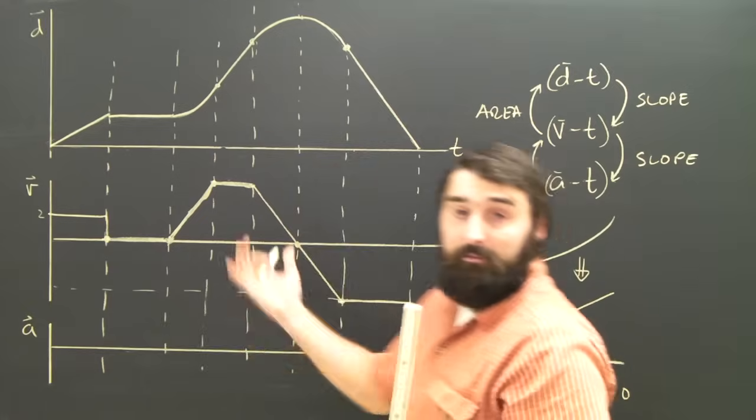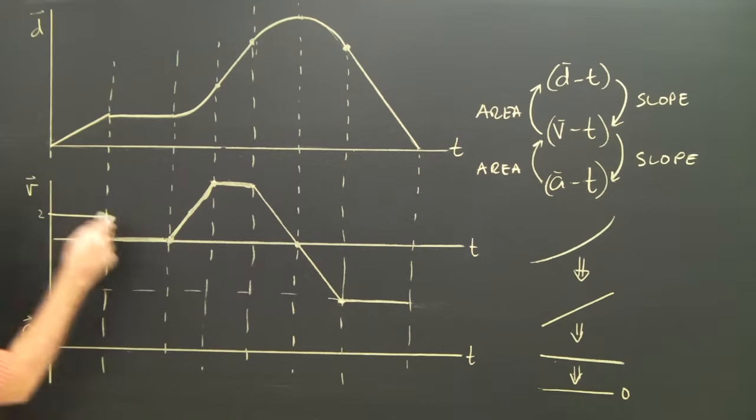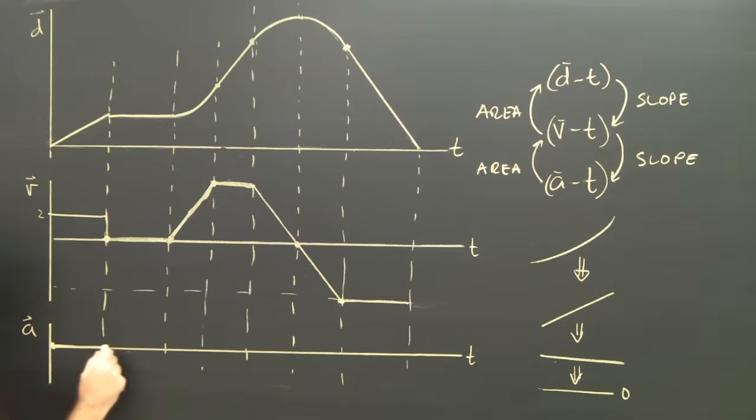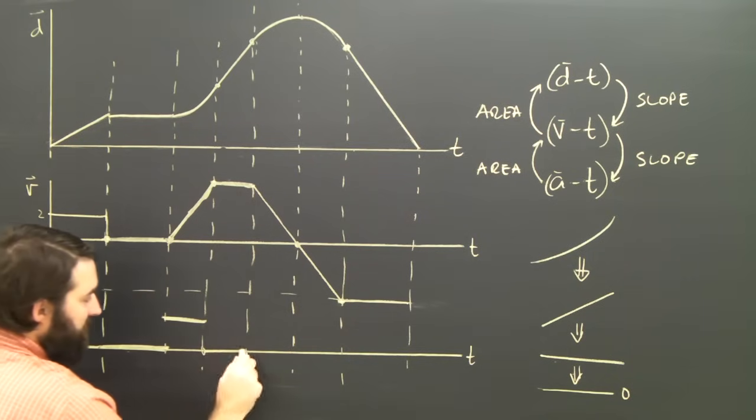Finding the AT graph from the velocity time graph is the exact same thing, but generally easier. What's the slope for the first little bit? It's clearly zero. What's the slope for the second bit? It's clearly zero. What's the slope for the third part? It's clearly positive. What's the slope for this middle part? It's clearly zero.